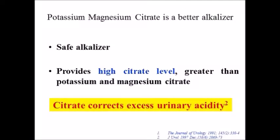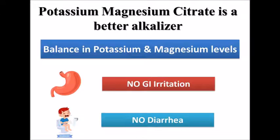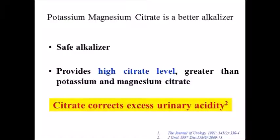Potassium magnesium citrate is a better alkalizer in comparison to other salts available in the market because it comes in a balanced form where potassium and magnesium are balanced along with a high concentration of citrate. Citrate is known for its action to correct urinary acidity, and this has been proven in many studies.